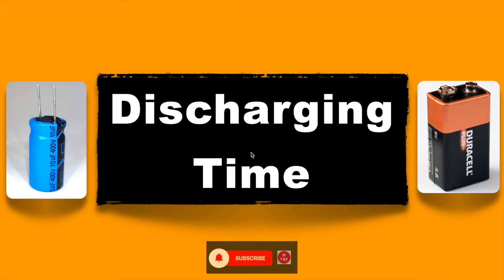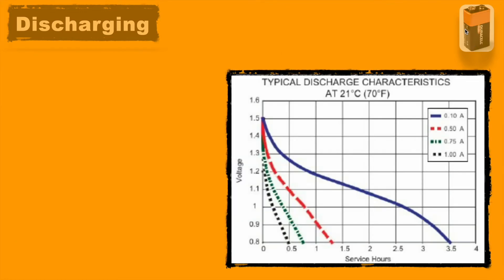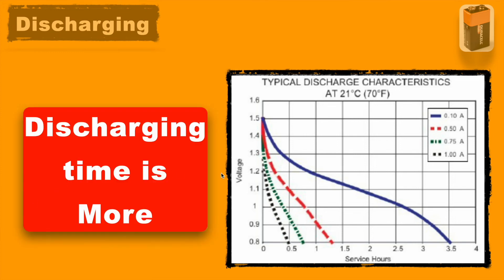Similarly, it also differs for discharging time. On one side, capacitor discharges very rapidly based on time constant RC, and its discharging time is very less. On another side, a battery takes hours to discharge, and this time depends on the load we are using. If we connect higher load to the battery, it will discharge faster. So in this case you can see this blue line which is connected to 0.1 ampere load takes 3.5 hours to get fully discharged, while this black line which is connected to very high load of 1 ampere gets discharged in just half an hour. So its discharging time compared to the capacitor is much more.